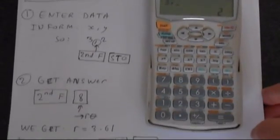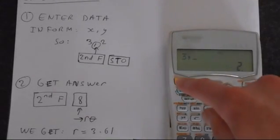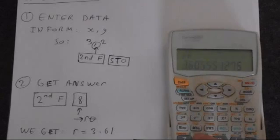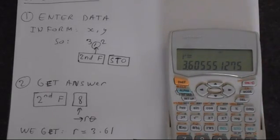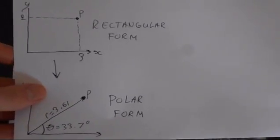Now we can just get the answer. We're pressing second function and then 8. That's got an arrow, R theta. And that gives us our value of R, which when you round is 3.61, which is exactly what we expected from here. You see that?